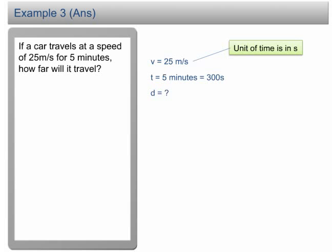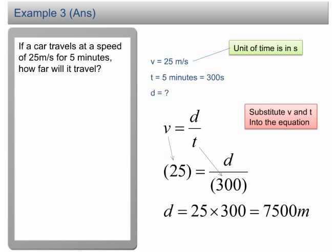From the previous slide, we know that the physics formula for speed is v equals d over t. Substitute v and t into the equation, then solve it, and we get d equal to 7,500 m. The car will travel 7,500 m in 5 minutes.